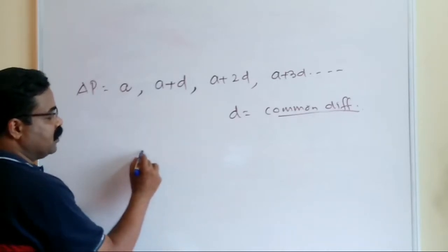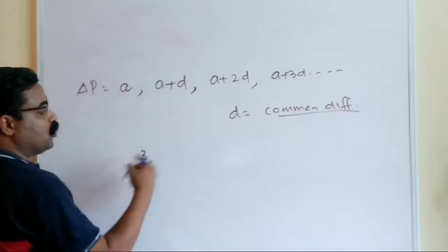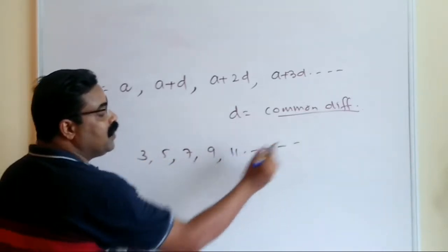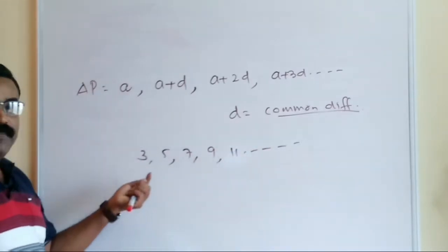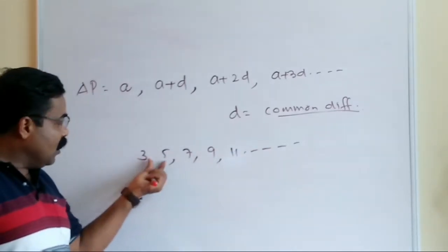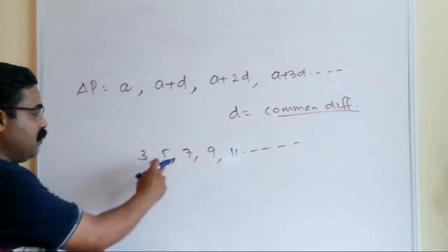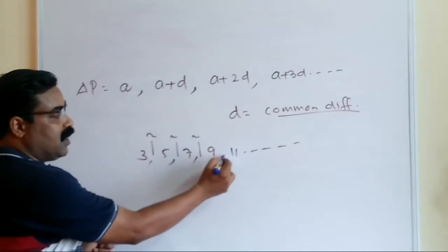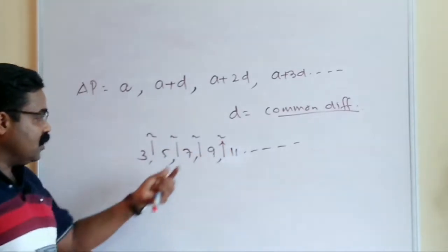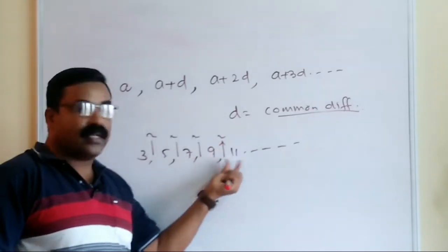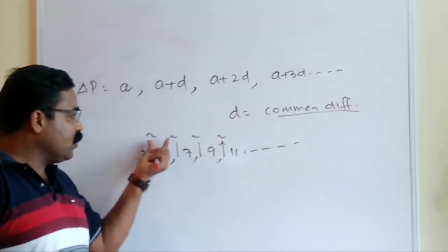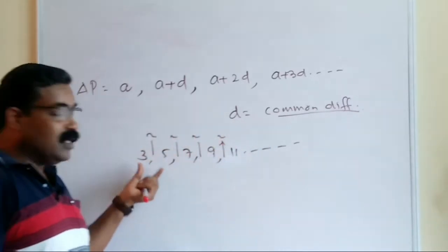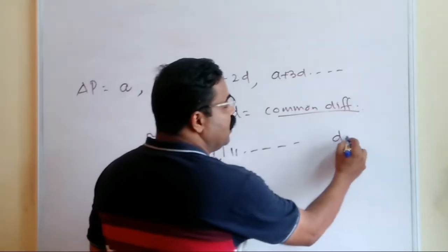For example, the sequence 3, 5, 7, 9, 11 — here I am adding 2 each time. You can see: 5 minus 3 = 2, 7 minus 5 = 2, 9 minus 7 = 2, 11 minus 9 = 2. So the common difference is 2, which is positive. In this AP, d is positive.